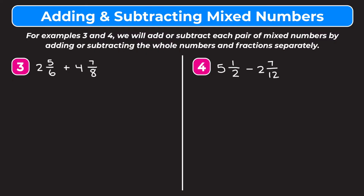So let's dive into number 3. Number 3 says 2 and 5 sixths plus 4 and 7 eighths. What we want to do is keep our mixed numbers as mixed numbers and turn our fraction parts into fractions with a common denominator. To do that we have to find the least common multiple of 6 and 8. We're going to keep the whole number parts the same, so we keep the 2. The least common multiple of 6 and 8 is going to be 24.